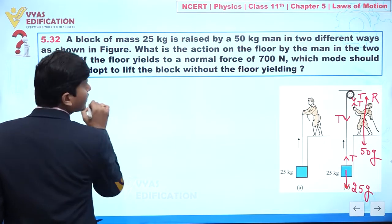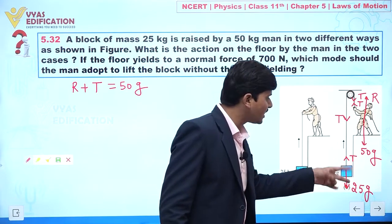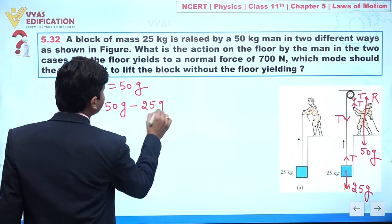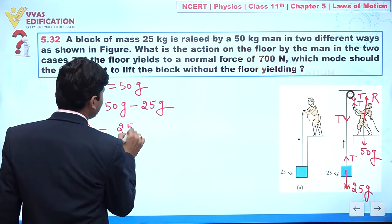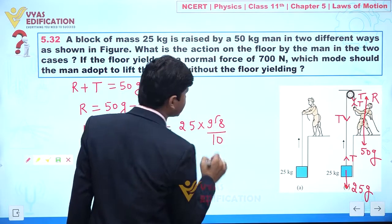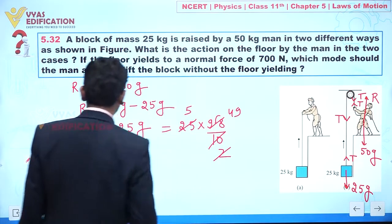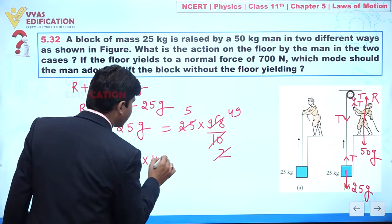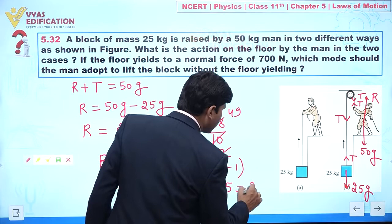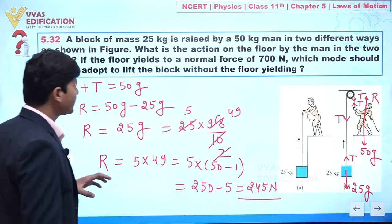From the force equation for method B: R plus T equals 50G. Since T equals 25G, we get R = 50G − 25G = 25G. Computing: 25 × 9.8 = 25 × (98/10). We get 5 × 49 = 5 × (50 − 1) = 250 − 5 = 245 Newton. So the reaction force R is 245 Newton.